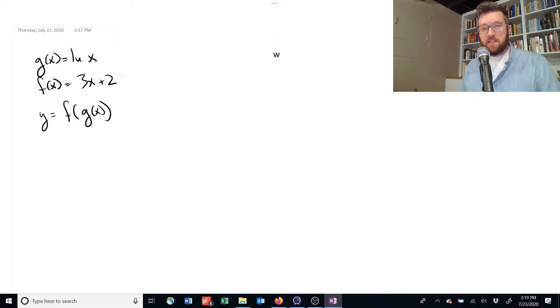What would that look like in this example? Well, f(x) is equal to 3 times x plus 2, but instead of x we're putting g(x) in. So this is going to be 3 times the natural log of x plus 2.